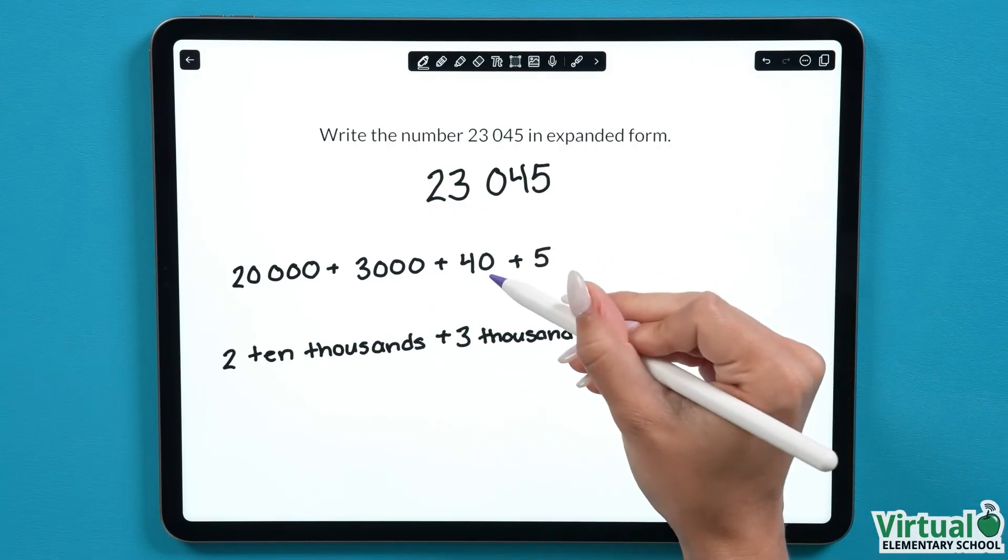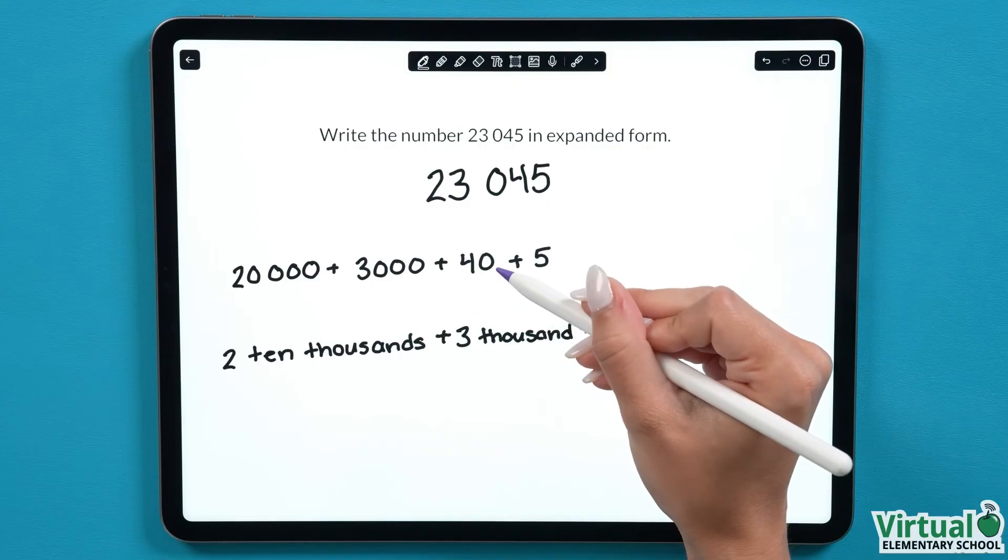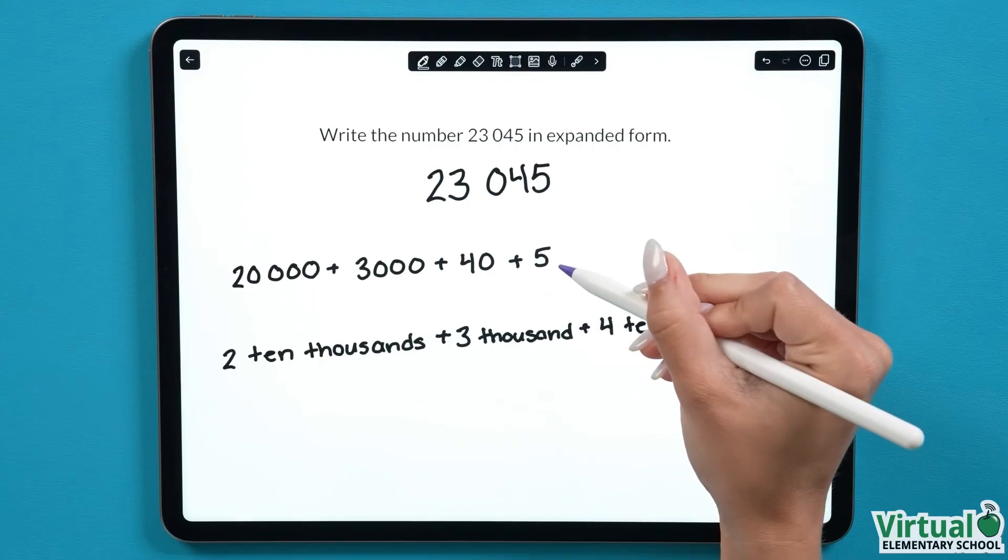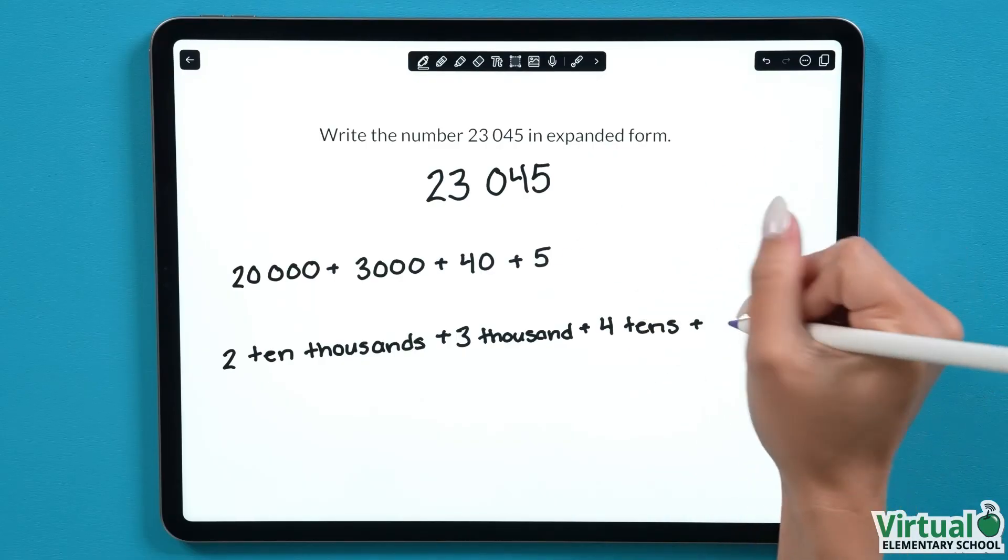Now we're at the tens. This number is 40, which is the same as 4 tens. And finally, our last number is a 5. It is in the ones column, so we write this as 5 ones. This is how we write numbers in expanded form using numbers and words.